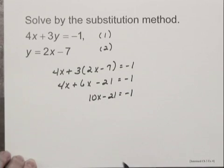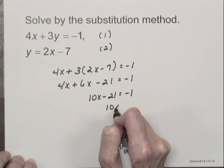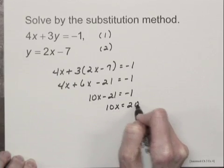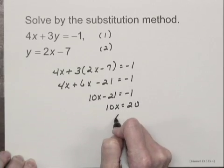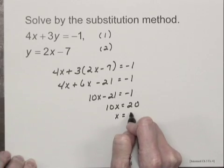Now I can add 21 on both sides, and I have 10x equals 20, and divide both sides by 10, and we find that x is equal to 2.